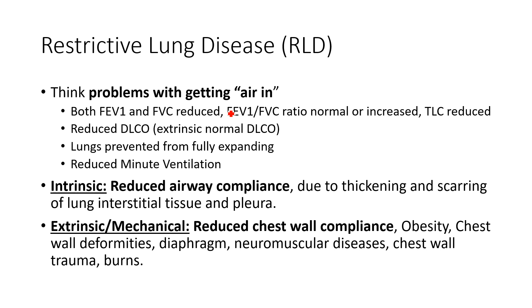Unlike obstructive defects, where the problem was getting air out — indicated primarily by a reduction in FEV1, or expiratory flow — in patients with a restrictive defect, we see reductions in both FEV1 and FVC. So the FEV1-to-FVC ratio is typically normal, or maybe even a little bit increased.